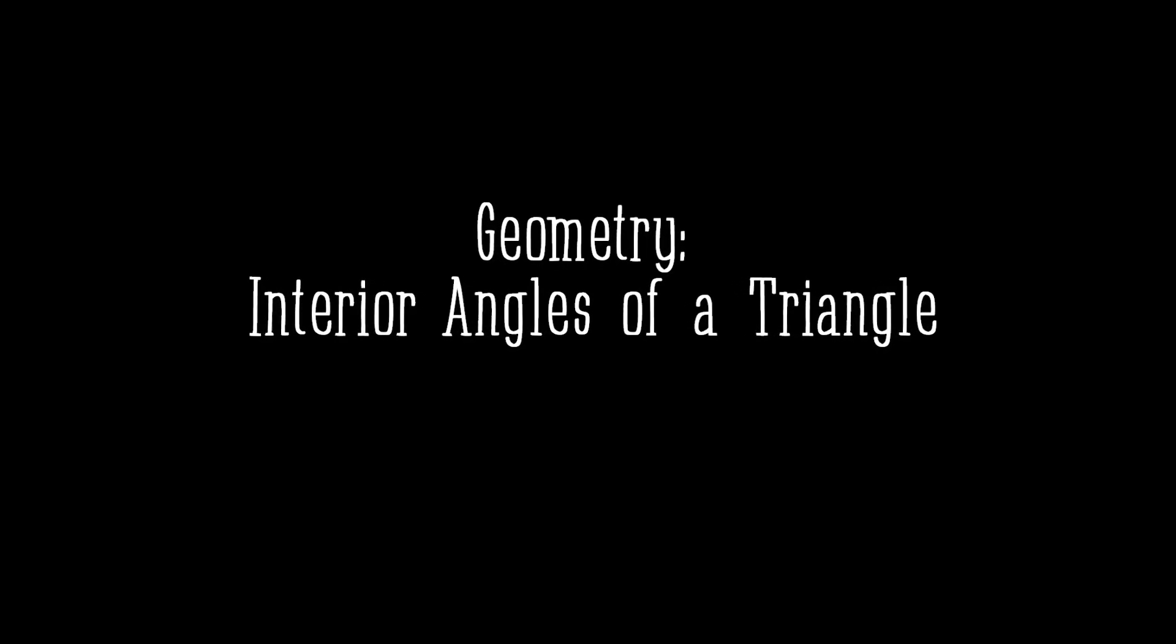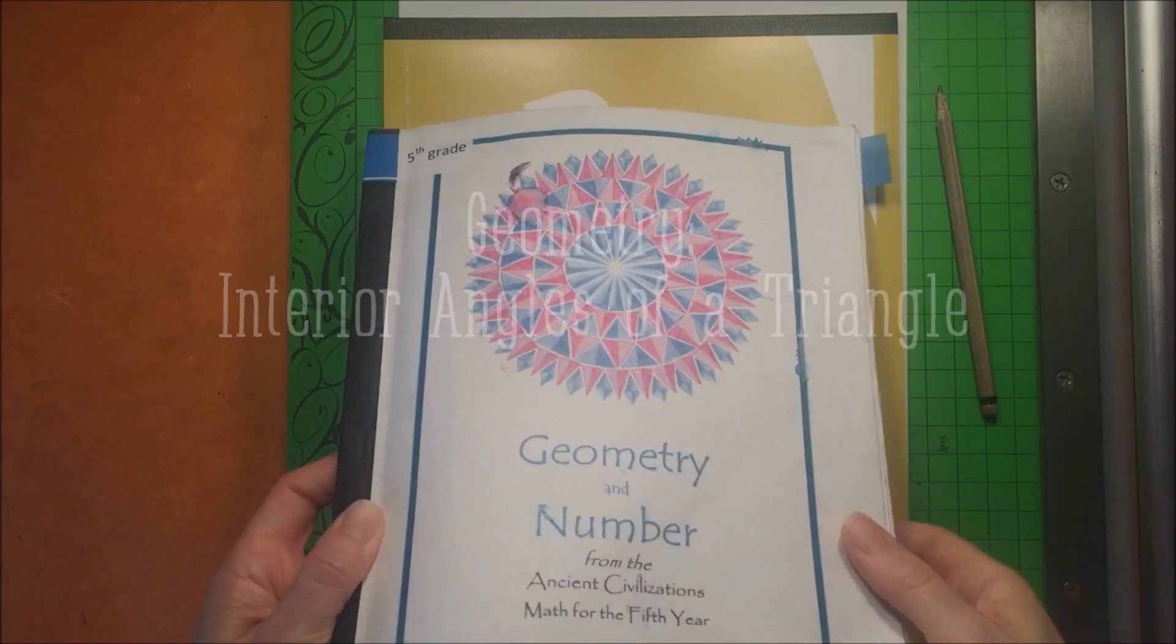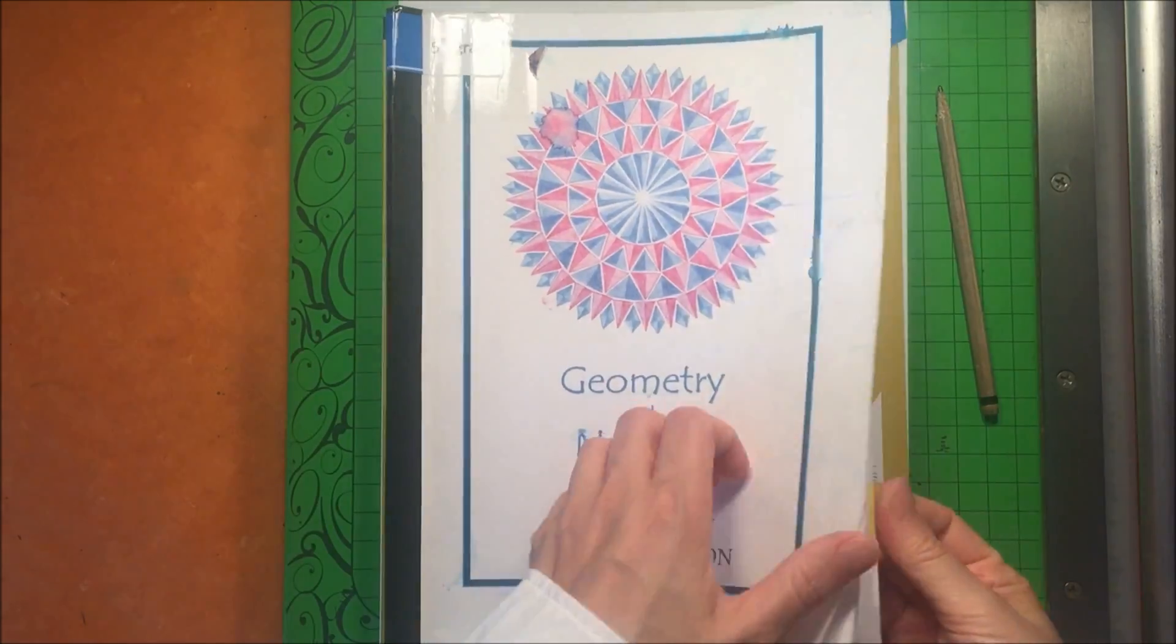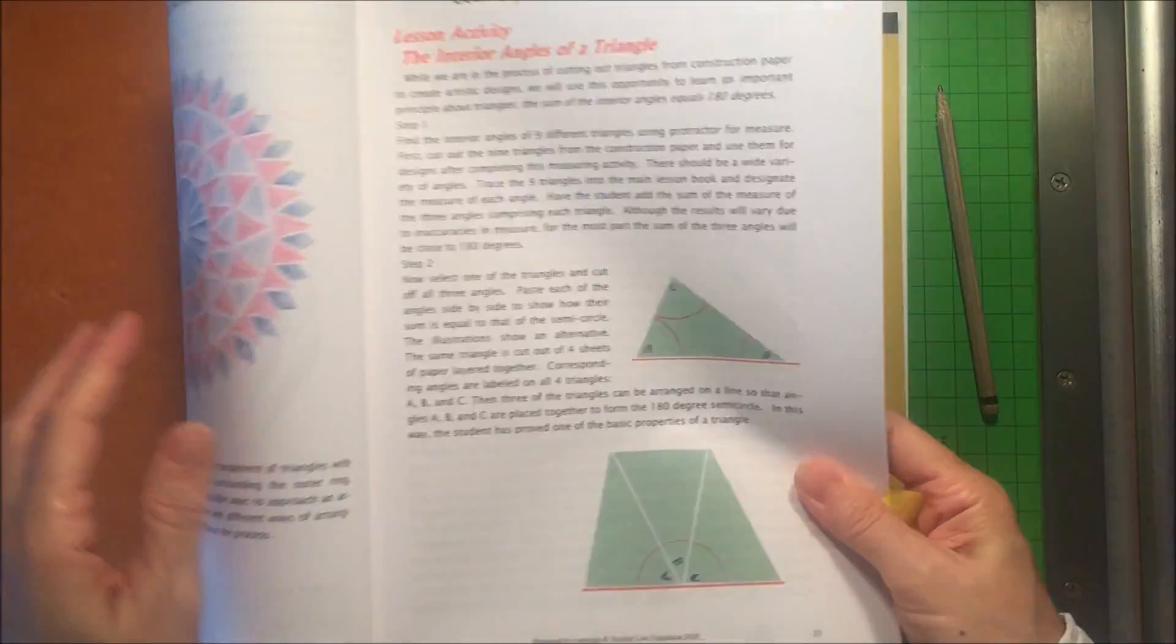Hello. I have a very quick and easy demonstration to show that the interior angles of a triangle equal 180 degrees.